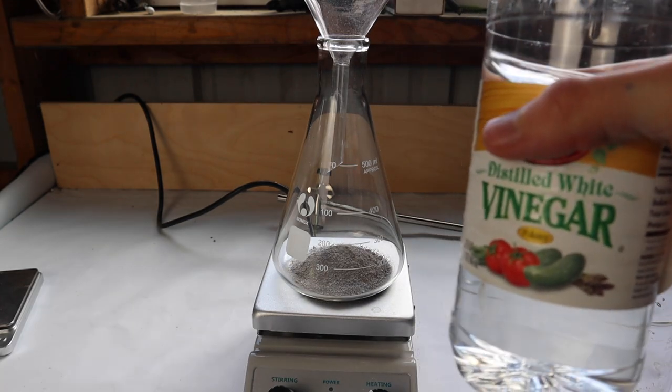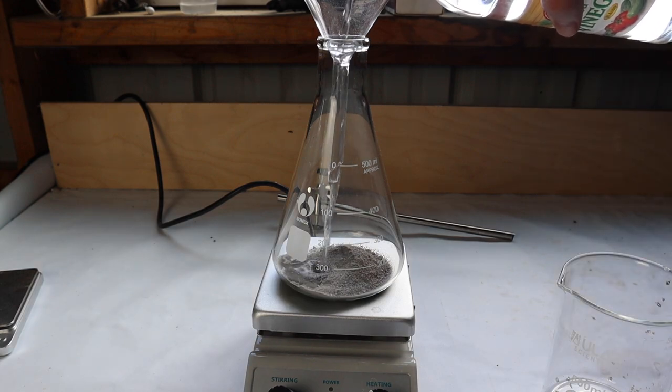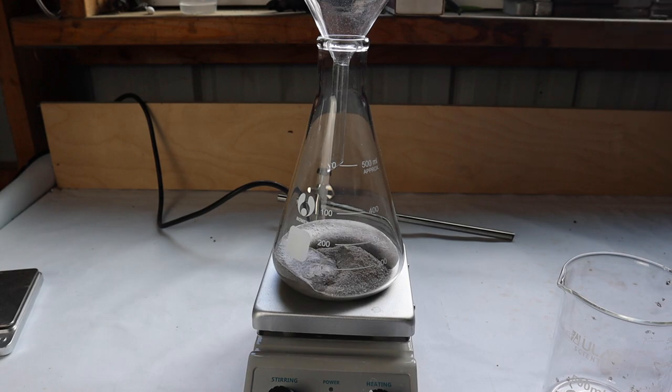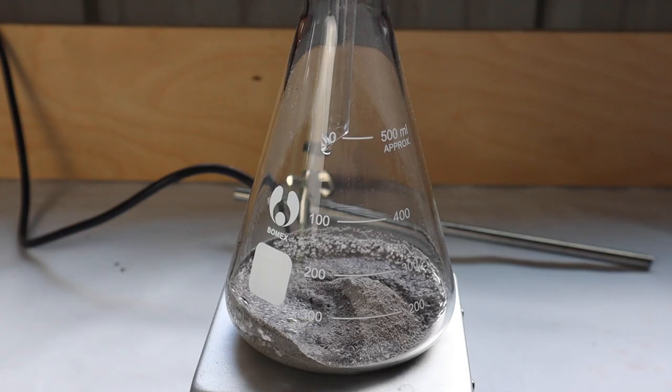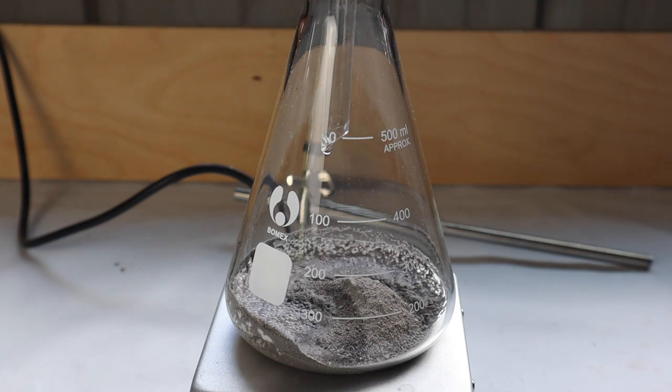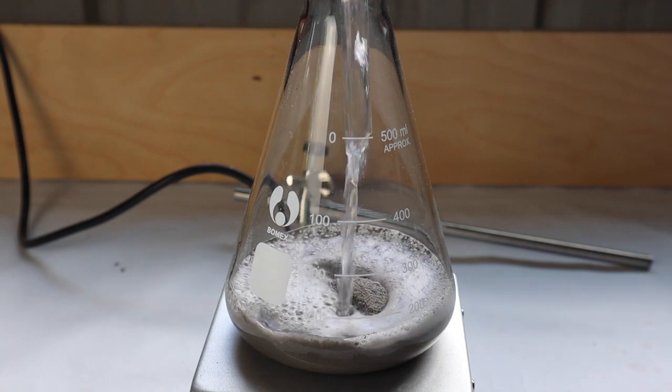I'm going to slowly pour in the vinegar now. You can see immediately why we can't pour it all in at the same time. It starts foaming a lot and given how small my flask is, probably wouldn't be the best idea to pour it in quickly.